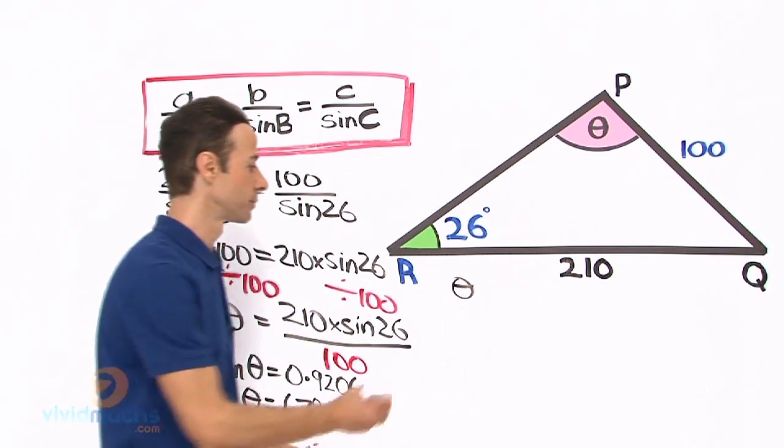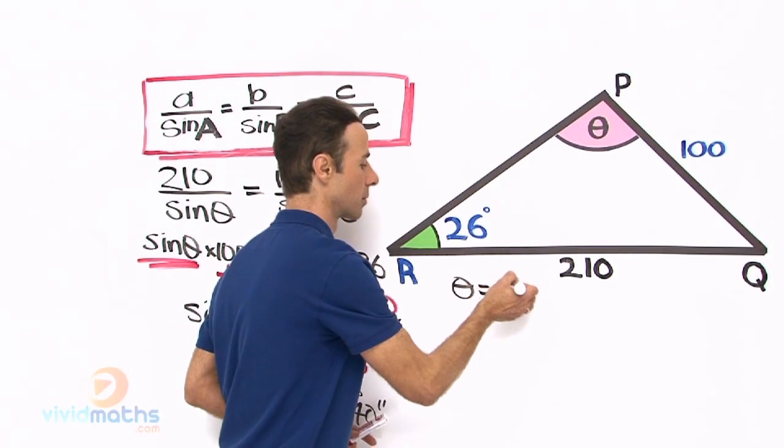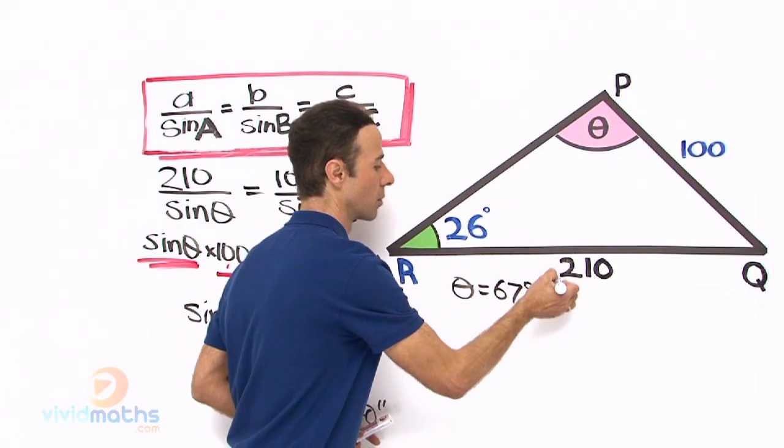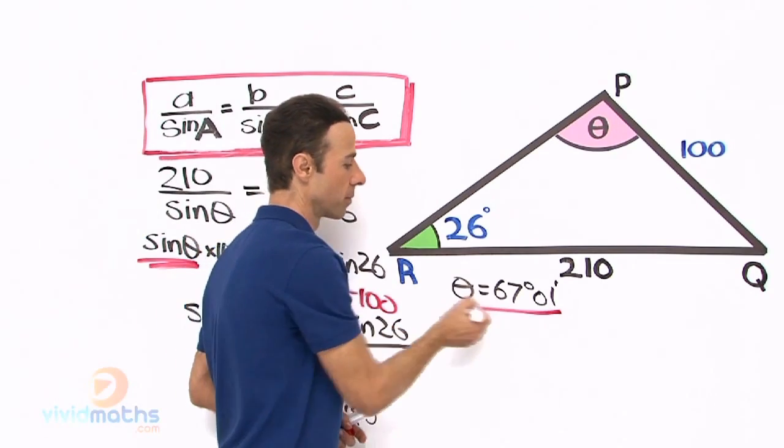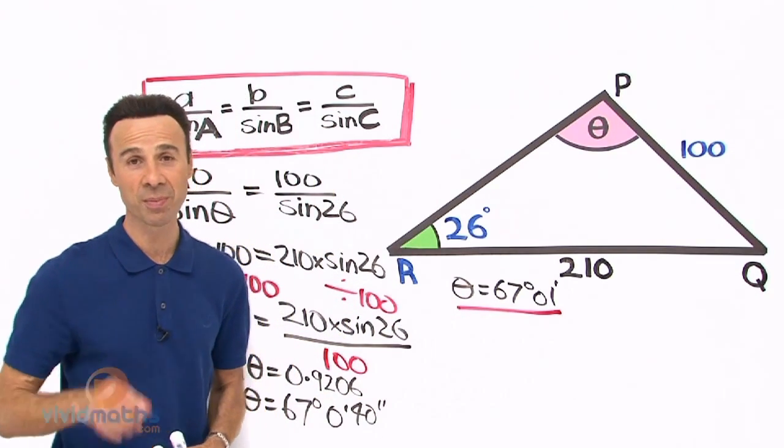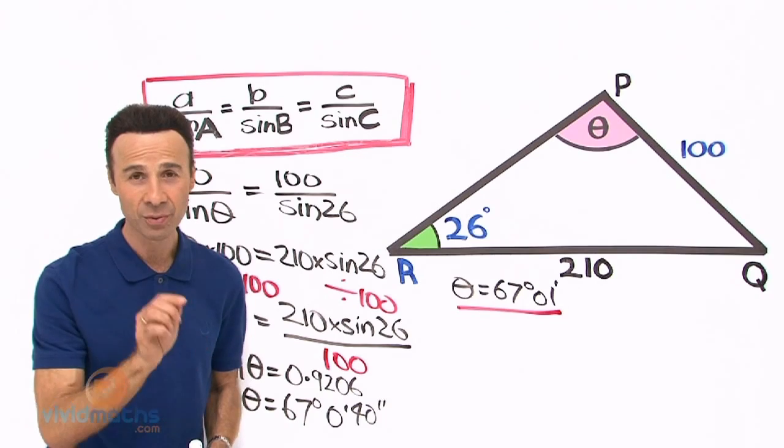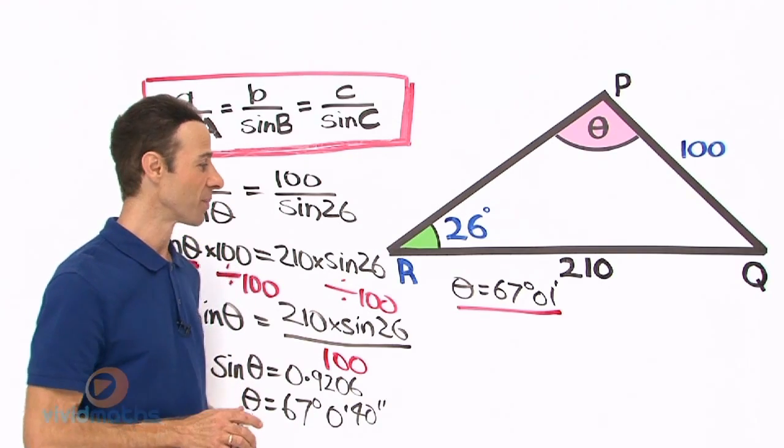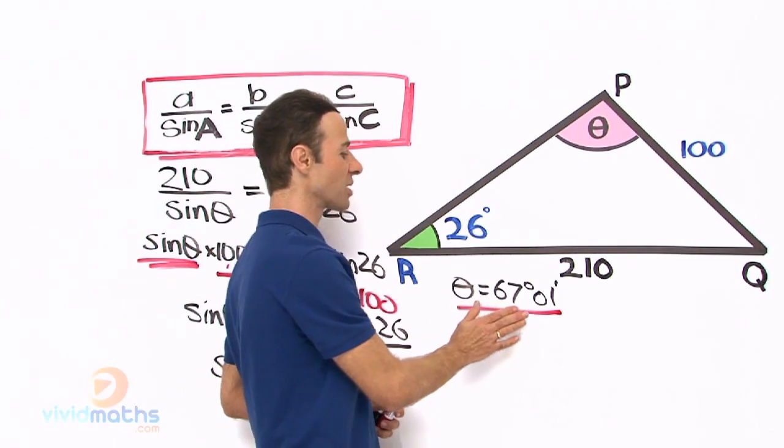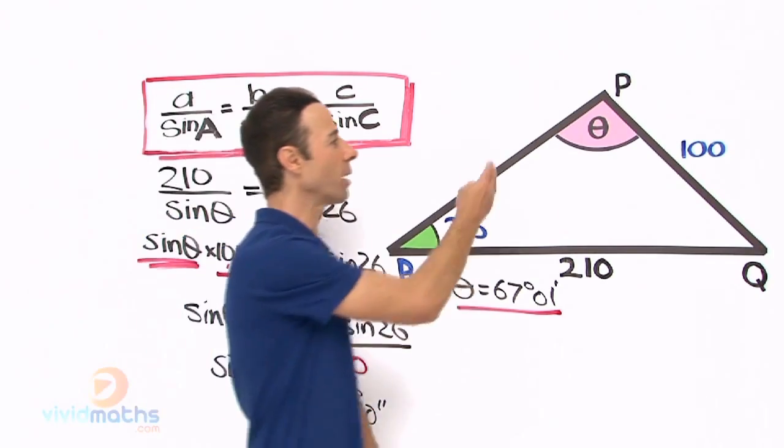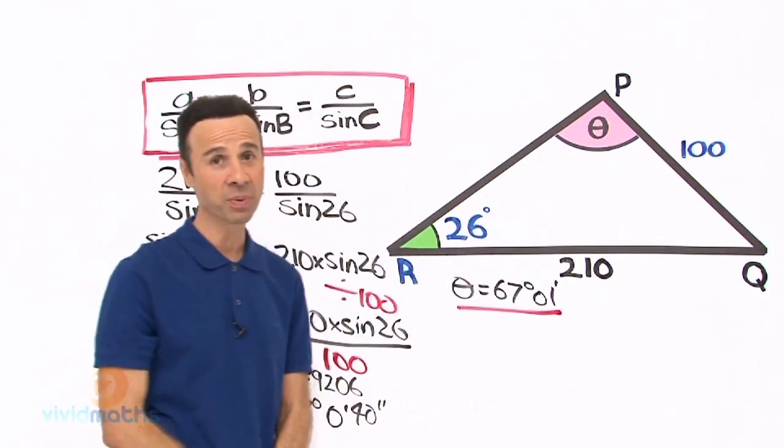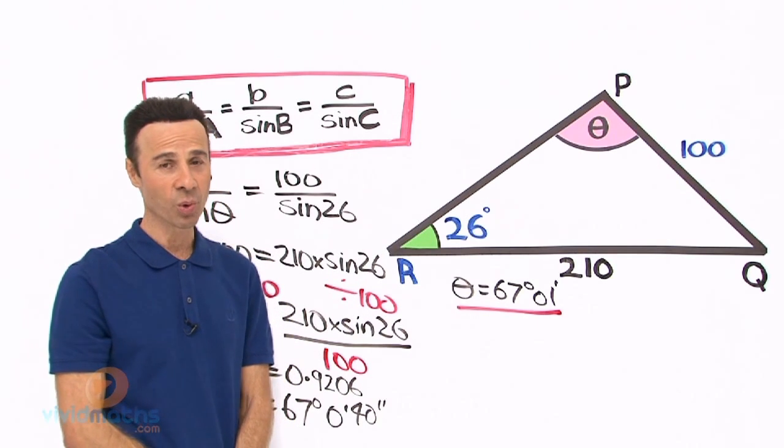OK that is what we have now but it is not obtuse. Remember the fine print, read the fine print in the question. So we want to check this out, 67 degrees 1 minute. What do we do? How do we make it obtuse? That angle does look obtuse, it does look bigger than 90 degrees.